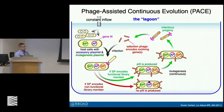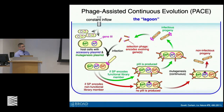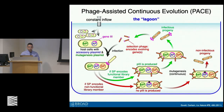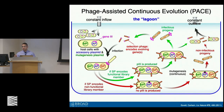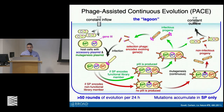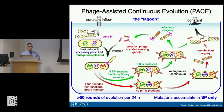Through this mutagenesis plasmid, we continuously induce mutations into the selection phage to enhance the diversity of the elements we're trying to evolve. On the other hand, if the selection phage does not encode a functional library member, no P3 is produced, and while these do result in packaged viral-like particles, these particles are non-infectious and are not retained on average during the rest of the experiment. We can further modify the selection stringency by regulating the outflow rate from the lagoon — as the outflow becomes faster, the phage would be expected to replicate faster to overcome this constant dilution. Depending on the selection, we can do upwards of about 50 rounds of directed evolution every 24 hours.